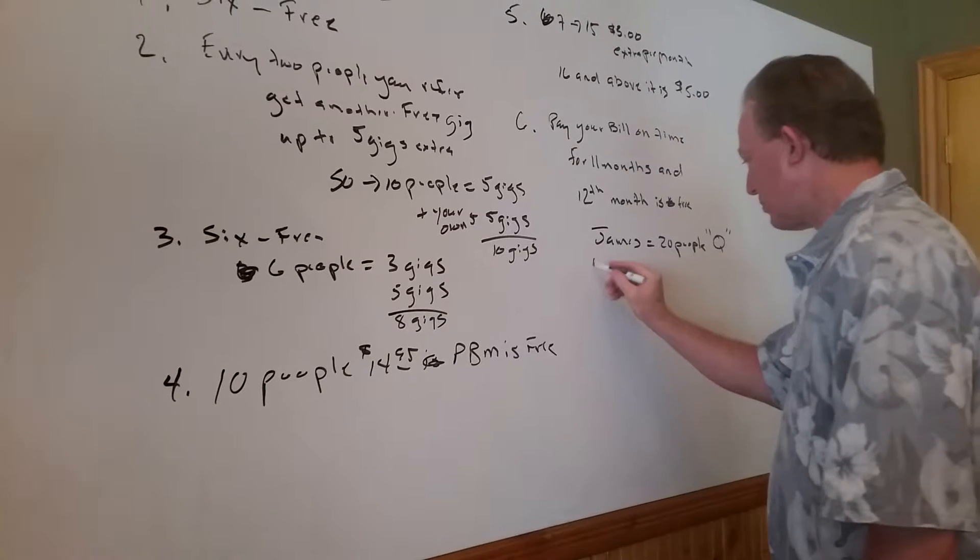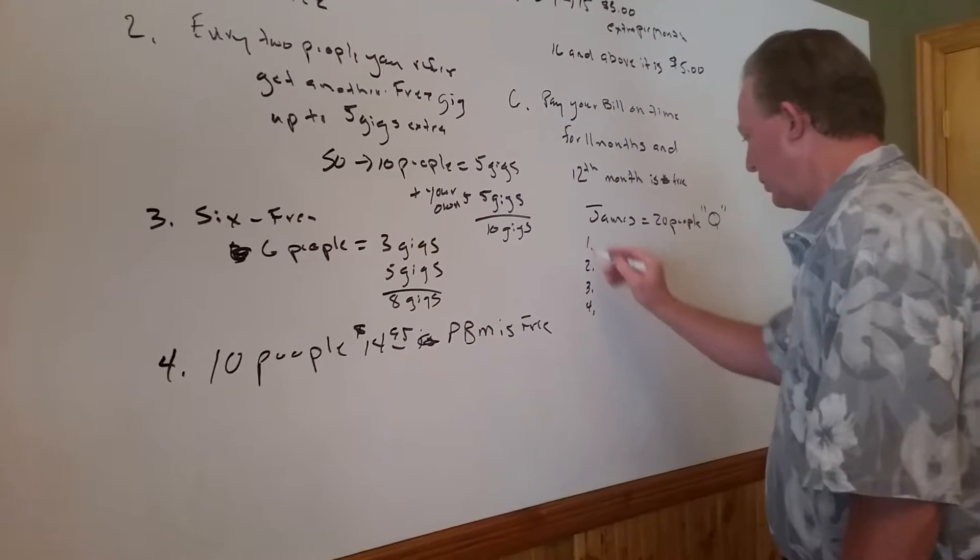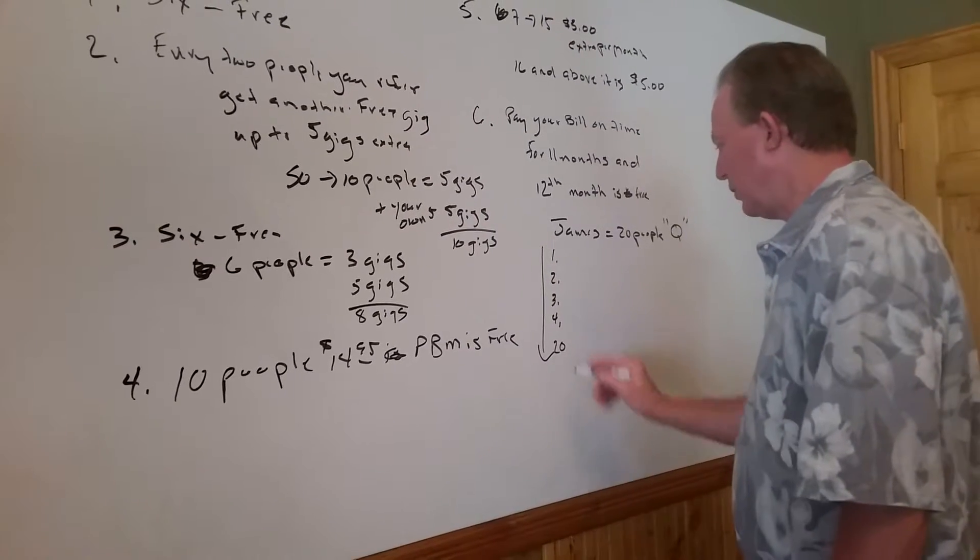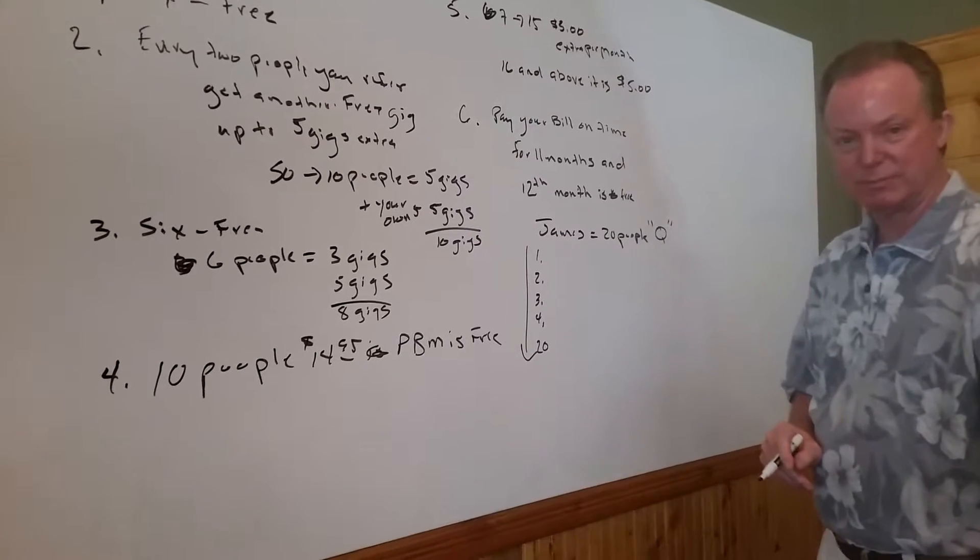Under the builder bonus, one, two, three, four, down to 20, there, James gets all that credit.